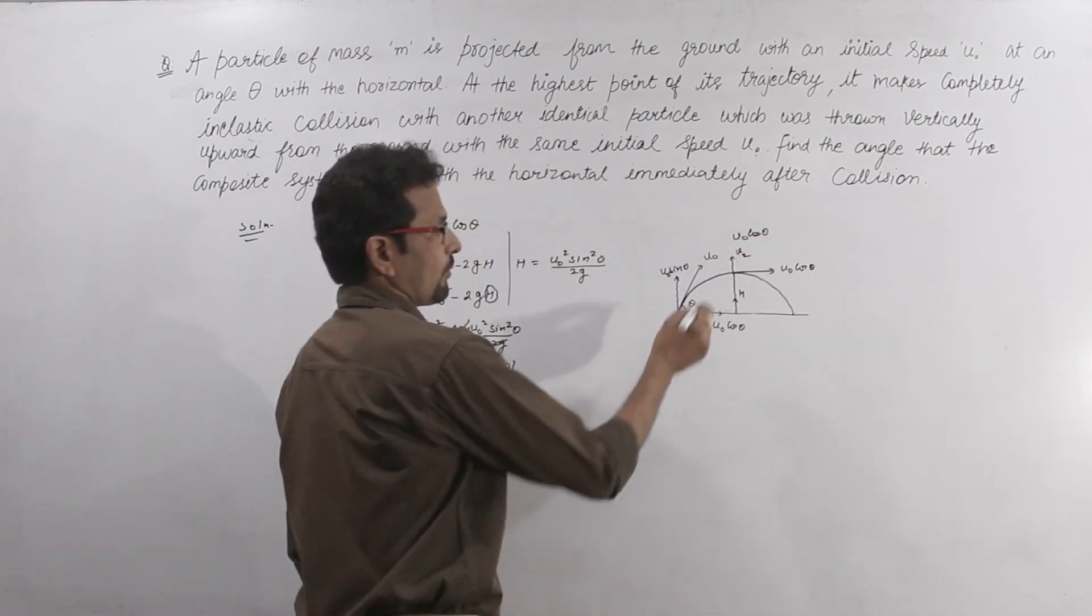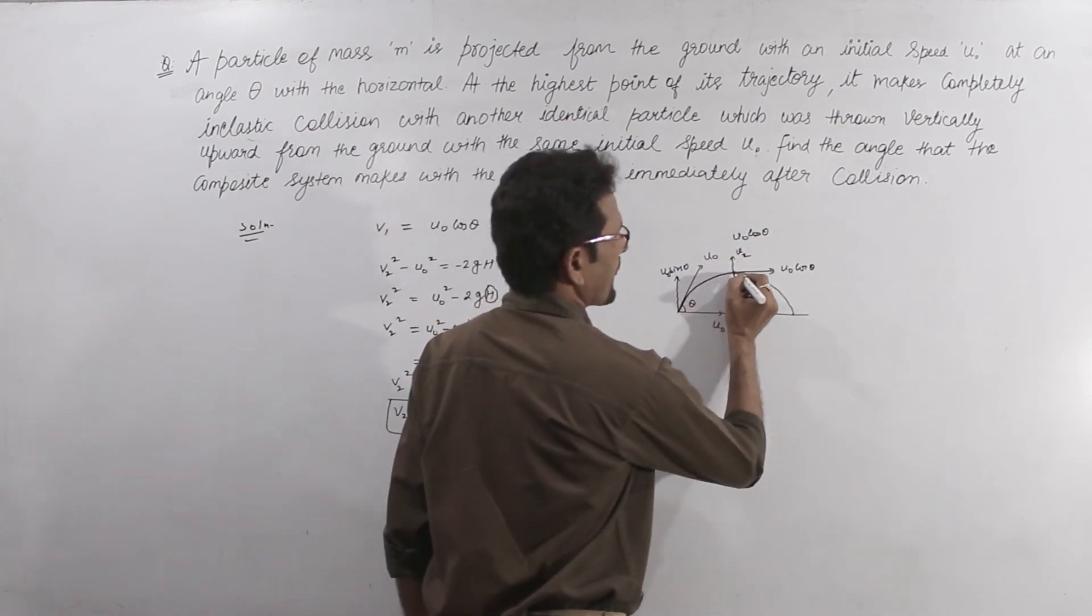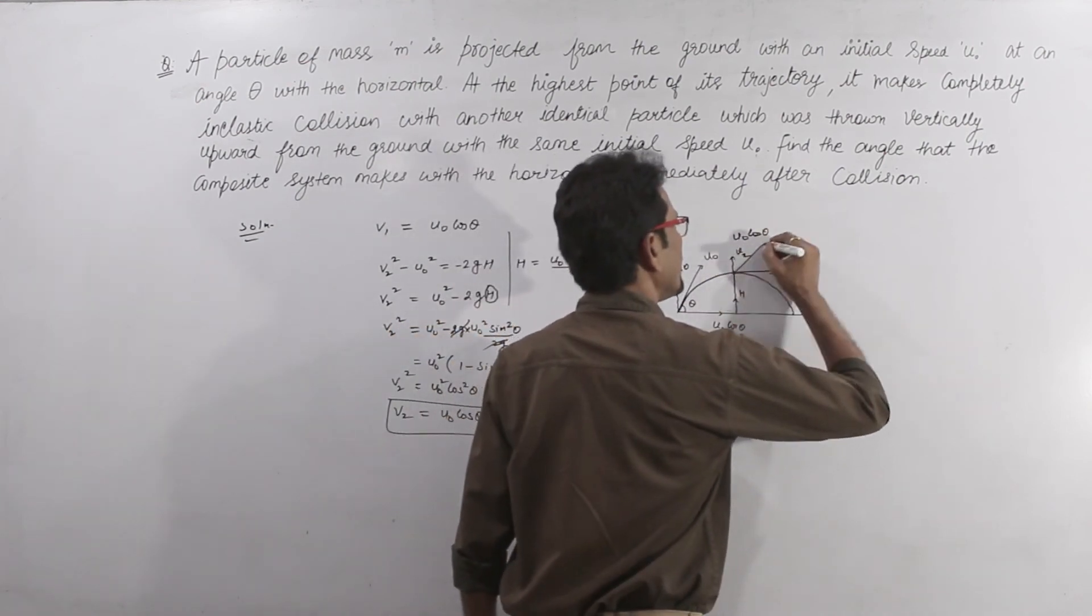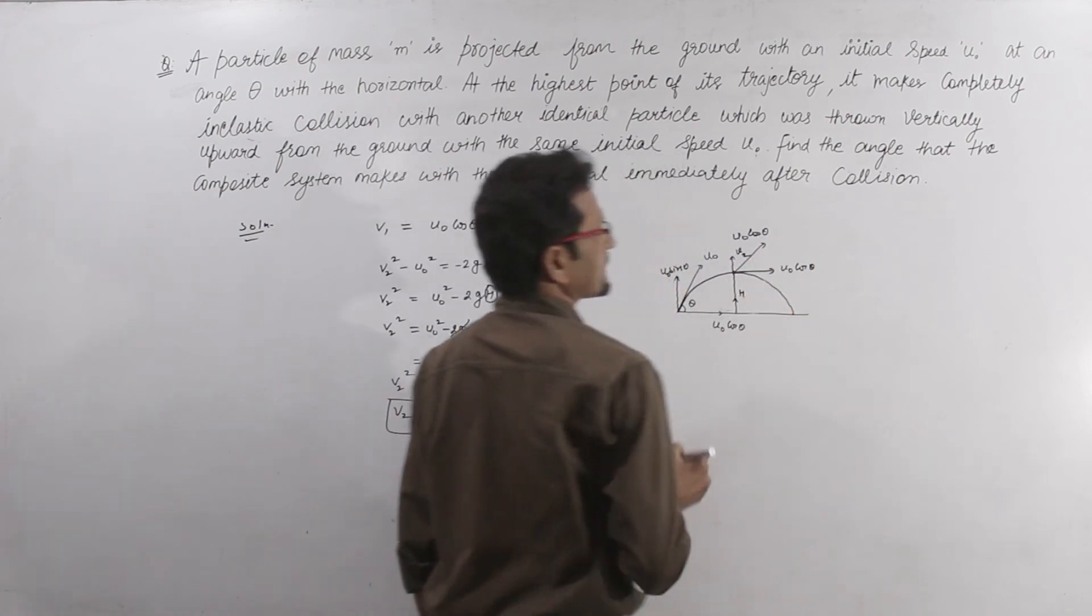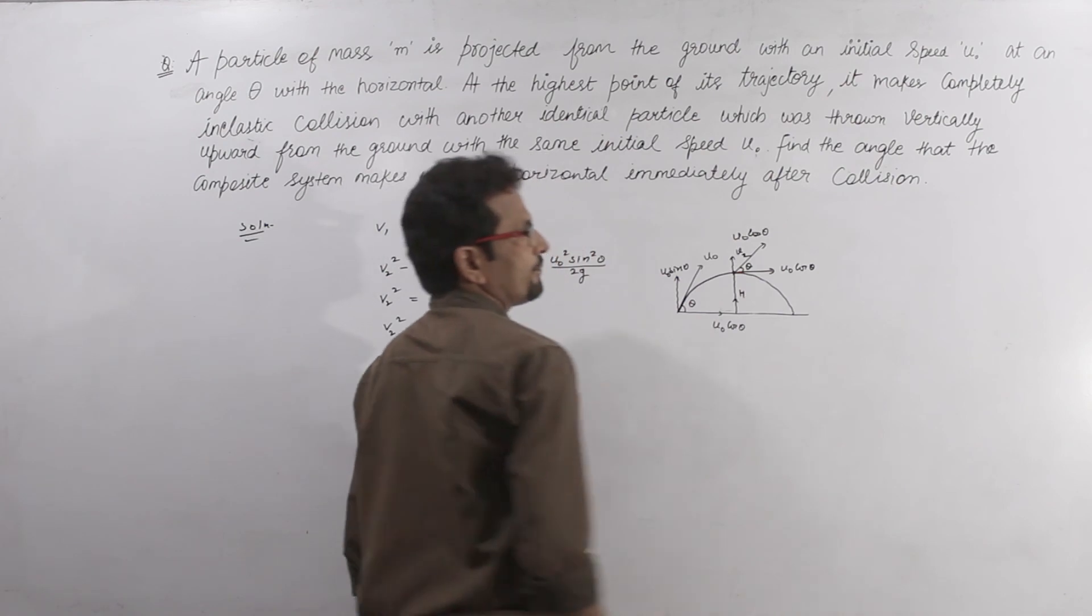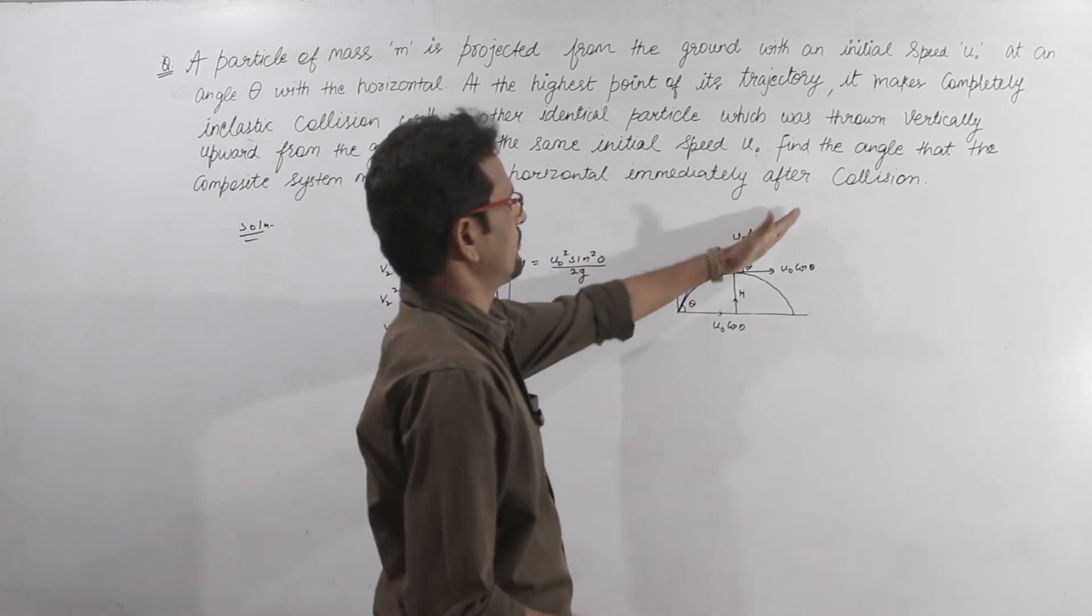Now both bodies stick together here. One velocity is horizontal, one is vertical, so the resultant velocity will be along this direction. This is the angle of resultant motion.